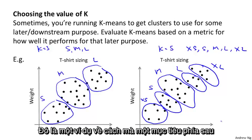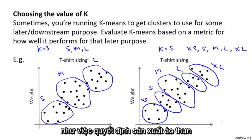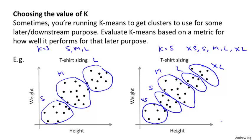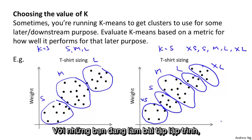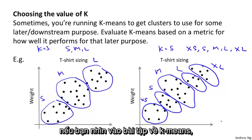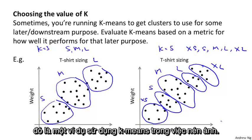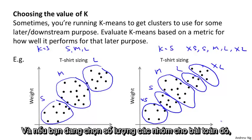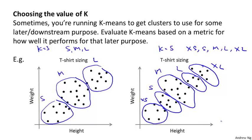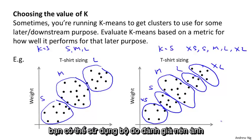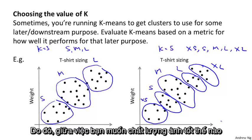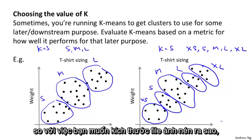So that gives you an example of how a later downstream purpose, like the problem of deciding what t-shirts to manufacture, how that can give you an evaluation metric for choosing the number of clusters. For those of you that are doing the programming exercises, if you look at this week's program exercise associated with k-means, there's an example there of using k-means for image compression. And so if you were trying to choose how many clusters to use for that problem, you could also use the evaluation metric of image compression to choose the number of clusters k. So how good do you want the image to look versus how much do you want to compress the file size of the image.